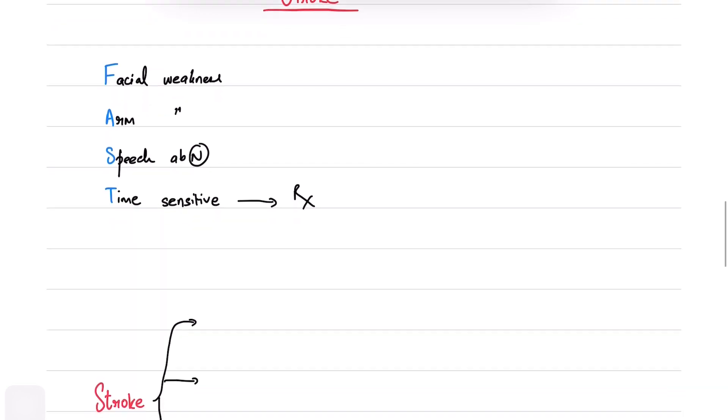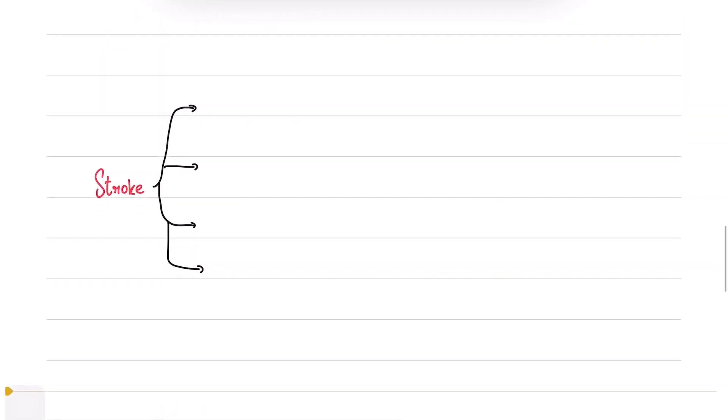We are going to discuss four major causes of strokes which are also high yield for exams. The first is middle cerebral artery occlusion. Then we have anterior cerebral artery occlusion, internal carotid artery, and posterior cerebral artery occlusion.